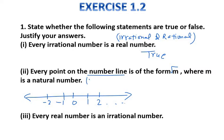Natural numbers are 1, 2, 3, 4, 5 and so on. We can't get negative numbers from natural numbers. Therefore we can say this is false — not every point on the number line can be expressed as √m where m is a natural number. So this statement is false.